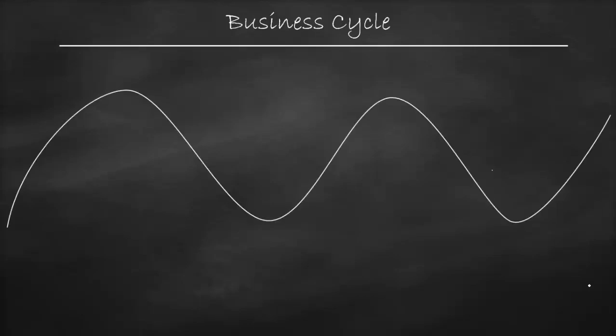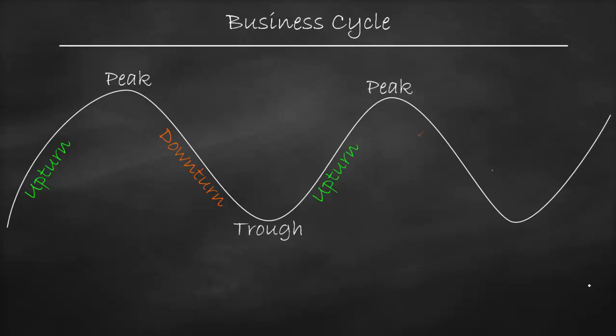The economy improves and then deteriorates, and that's why each business cycle can be classified into four phases: upturn — it increases — then we reach the peak, the maximum, and then it slows down, we have a downturn, it reaches the minimum, which is the trough, and then the cycle keeps repeating itself. The economy improves again and then deteriorates. We have growth and then we have a decline.